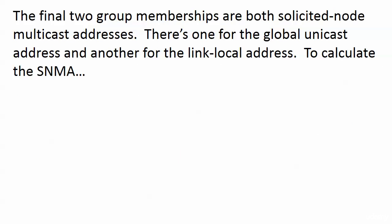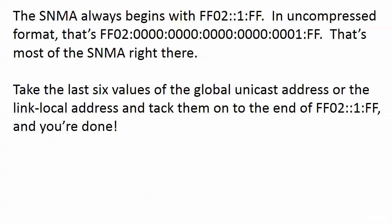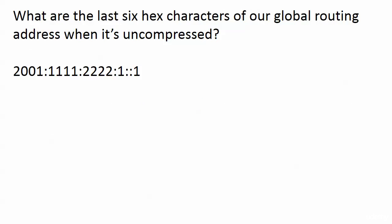The reason we saw two SNMAs is that one is for the global unicast address and the other is for the link-local address. Here's how the router comes up with them: the SNMA always begins with FF02::1:FF. You don't even need the uncompressed format — just take the last six hex values of either the global unicast address or the link-local address and tack them onto the end of FF02::1:FF, and you're done. The key thing to watch: you can't use the compressed version — you have to uncompress and get the last six characters.